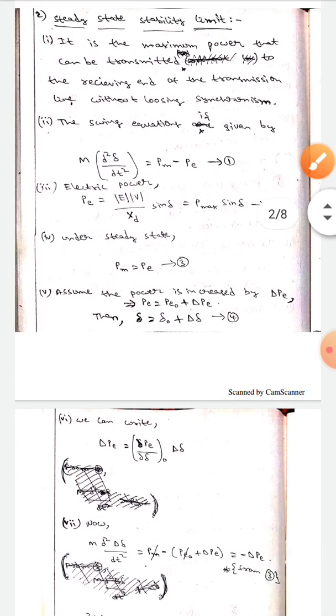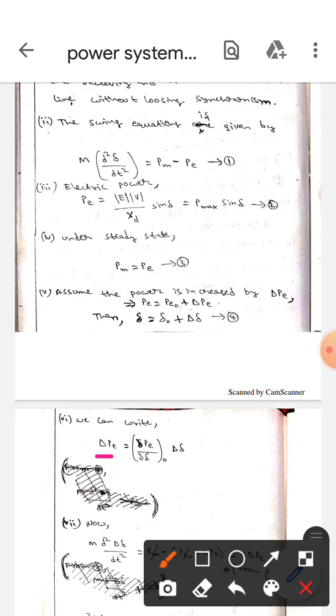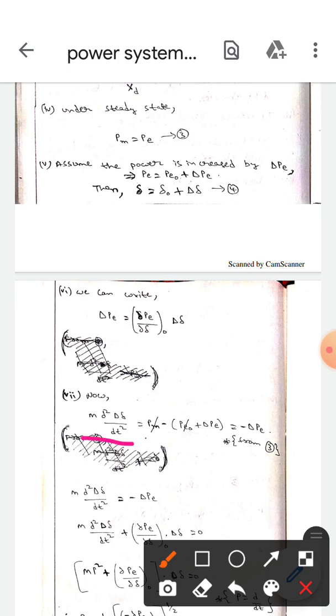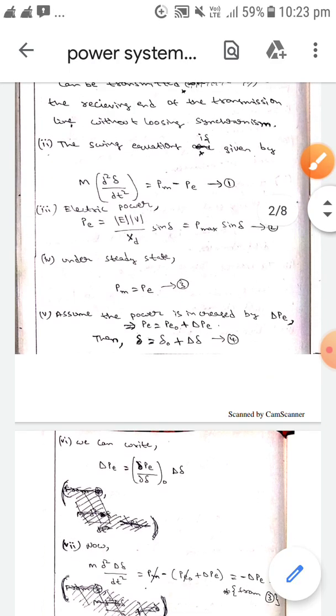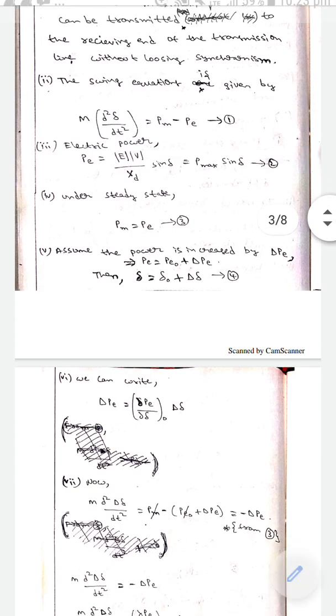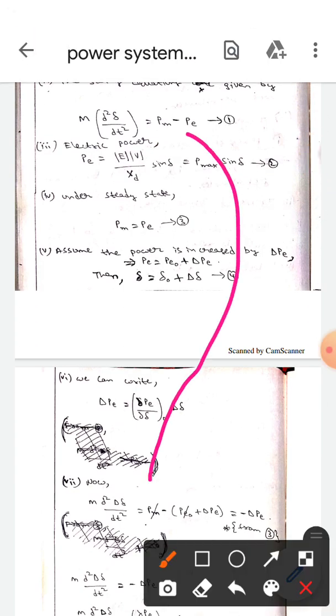We can write ΔPe as (∂Pe/∂δ)·Δδ. Now we know this is the swing equation we already know. Here, we write this equation again.